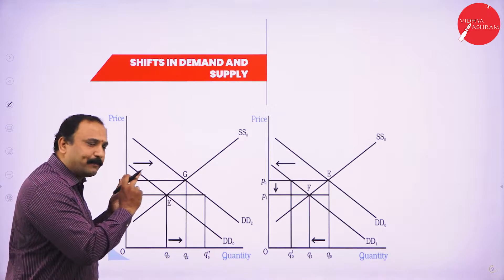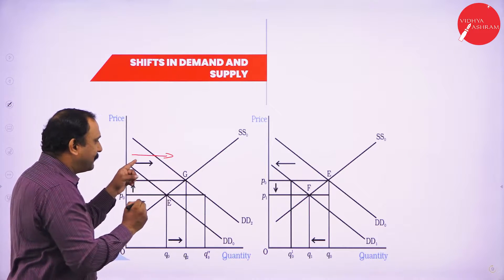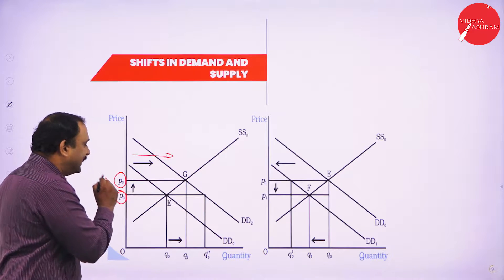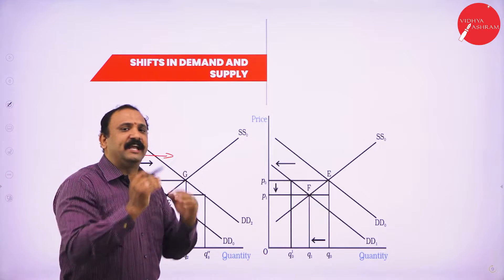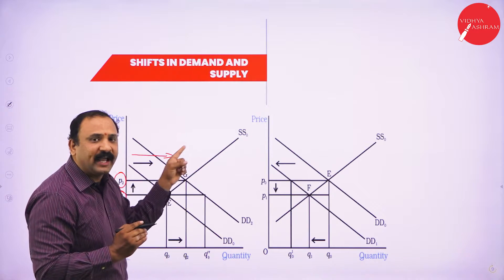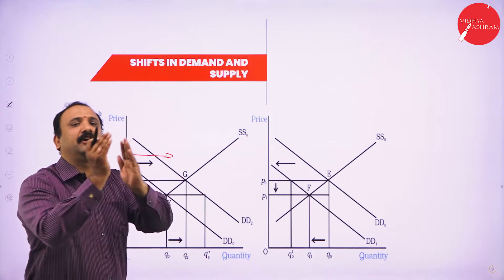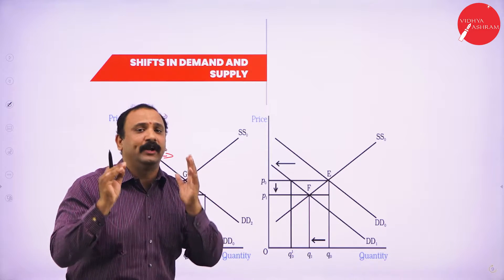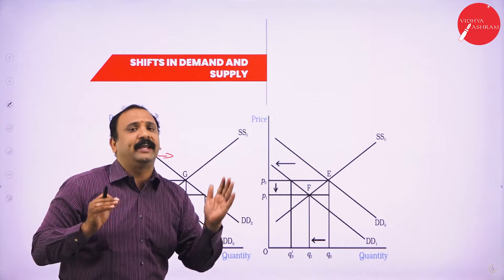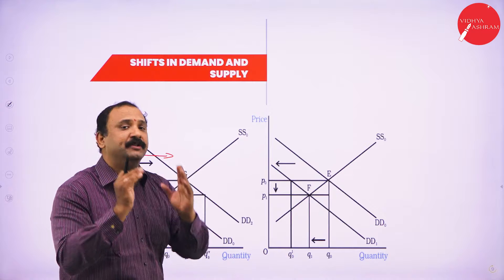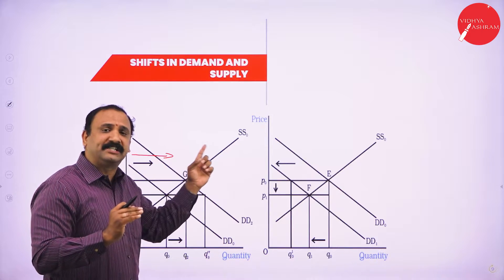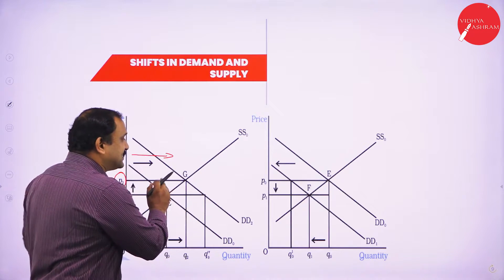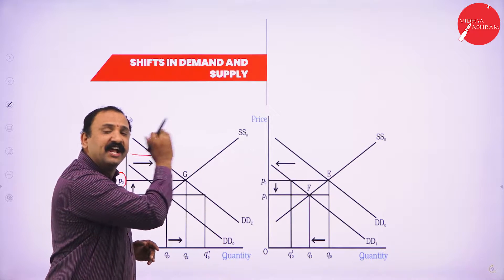Now as the price increases — the price is increasing from P0 to P2 — there is an increase factor. The moment there is an increase in price, automatically the supply curve will shift rightwards. That means the producer, the manufacturer, finds it in an advantageous position because now he can supply more to the market and earn more. The market is allowing for a price rise, which means the supplier would be interested in supplying more products, so the supply curve tends to move rightwards.